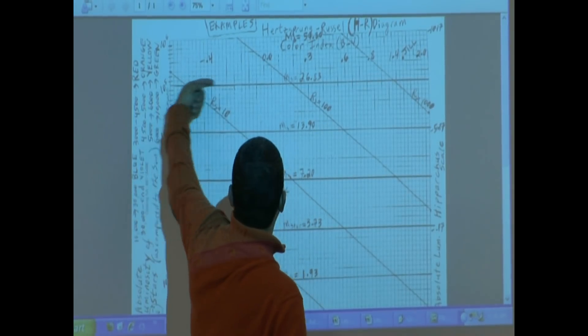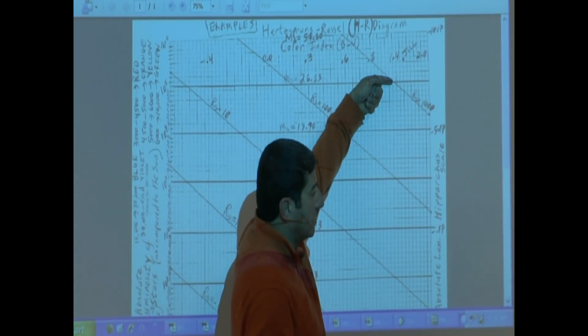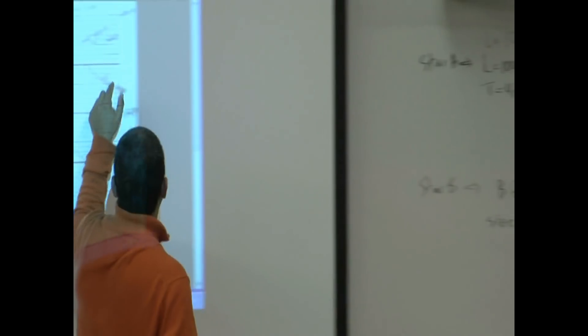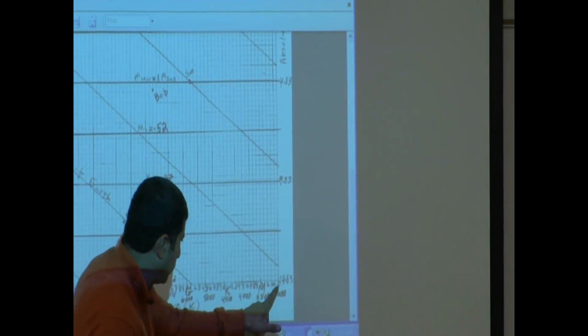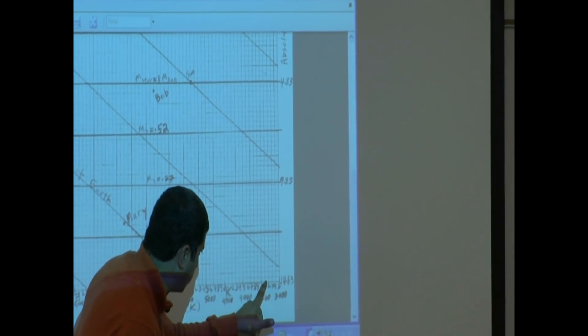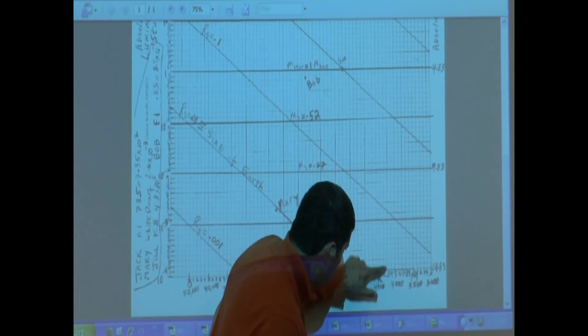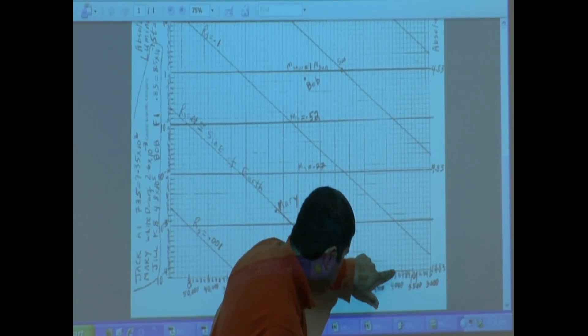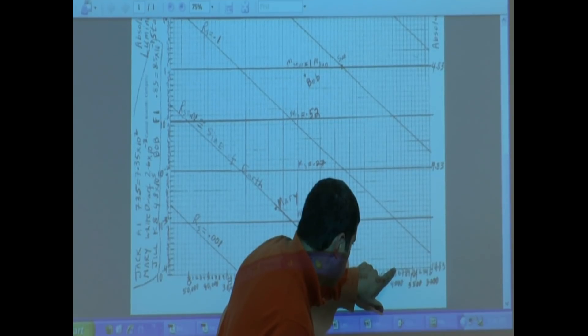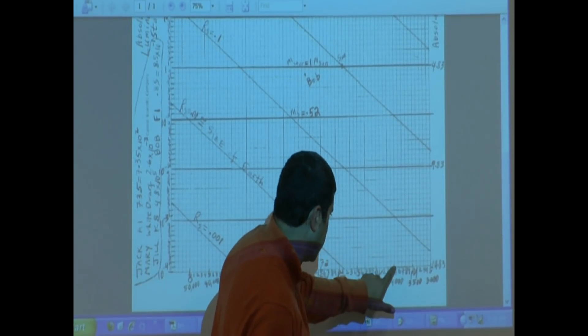How far to the right do I go? Until I get to four thousand Kelvin. Where was four thousand Kelvin? One, two, three, four, five, six, seven, eight, nine, ten. The tenth line. The tenth line is four thousand.